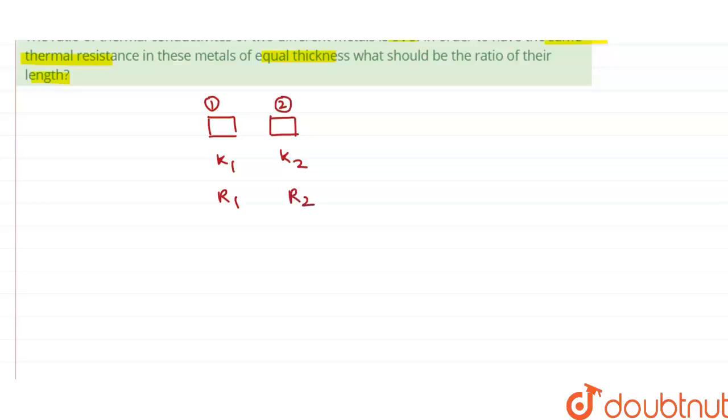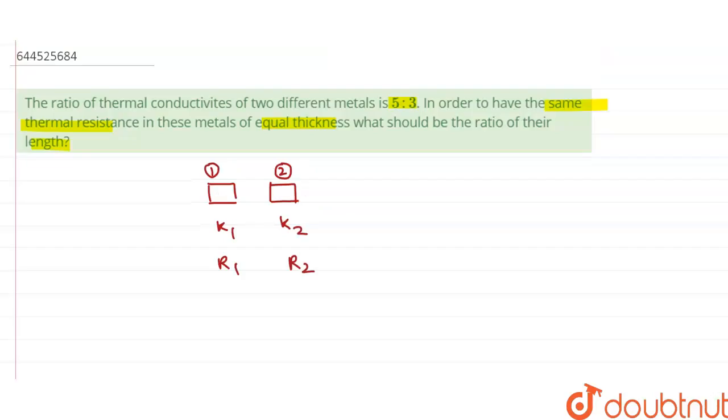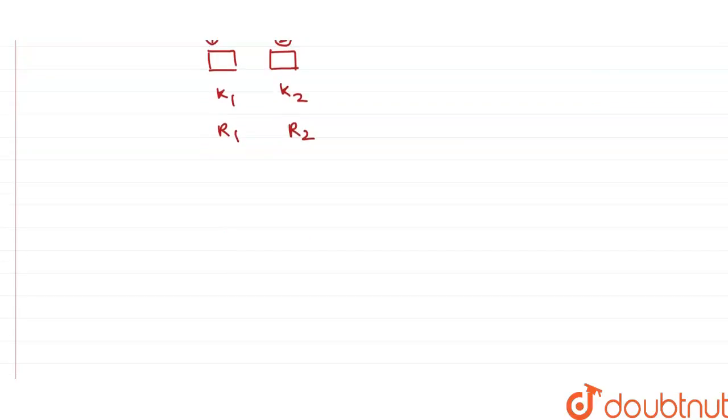Now we know that thermal resistance is given by the formula R = L/(kA), where L is the length, A is the cross-sectional area, and k is the thermal conductivity.